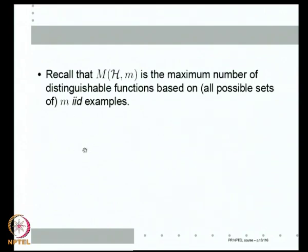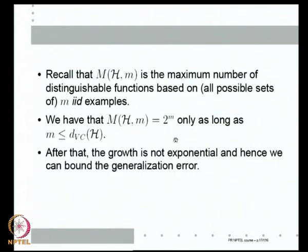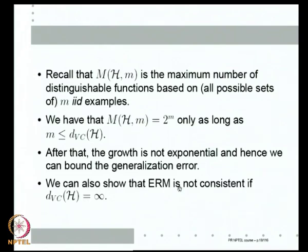To get a good appreciation of VC dimension: M-H(m) is the maximum number of distinguishable functions from H based on all possible example sets of size m. This number equals 2^m only as long as m is less than or equal to VC dimension of H. Once m exceeds VC dimension, this grows less than exponentially, and hence we can bound the generalization error. Till VC dimension, the maximum possible number of distinguishable functions grows exponentially; after that, growth is less than exponential, and our generalization bound works.